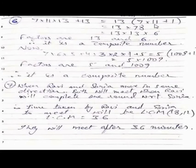13 into 7 into 11 is 77 plus 1, which equals 78. So we got 13 into 78 which is 13 into 13 into 6. Factors are 13 and 6. Therefore, it is a composite number.